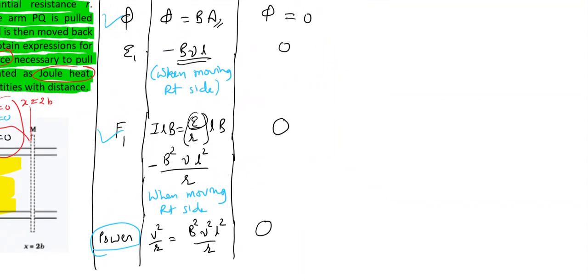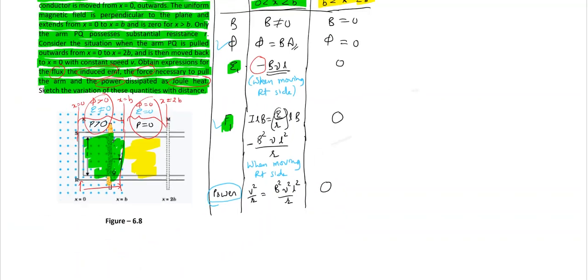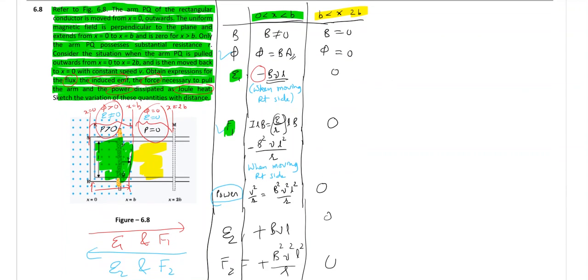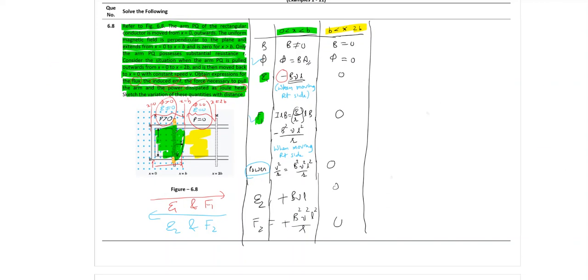Now these quantities, two quantities will change: epsilon and force. What is the difference? Earlier if it is negative, when you are moving the rod back, when you are going in this direction, you have epsilon 1 and f1. But if you are coming back, if you are moving the rod back, then you will have epsilon 2 and f2. Epsilon 2 will be plus bvl and f2 is plus b² v² l² by r. Direction of the force and emf will change but these other quantities will not change. These quantities will remain same. That is the difference.